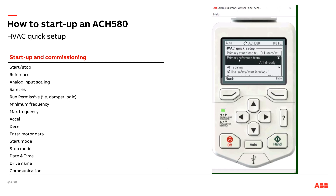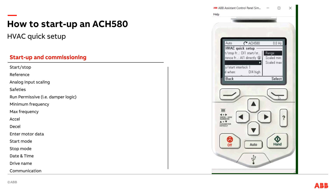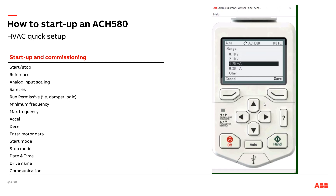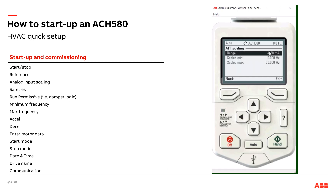Similarly for analog input one — where am I getting my speed reference from? Factory default is analog input one. I can set that to BACnet if I wanted to do my speed control over BACnet as an example. Taking a look at my analog input one scaling, I'm going to hit select. This is where I choose: is this a 0 to 10 volt signal or is this a 4 to 20 milliamp signal? I can change that to 0 to 10 or 4 to 20. Factory default happens to be 0 to 10. I'd previously changed this to 4 to 20 milliamps, so 4 to 20 milliamps equals 0 to 60 hertz. I can back out — my scaling is good to go.